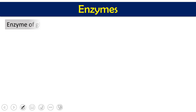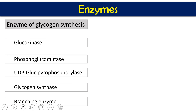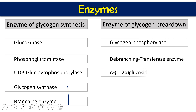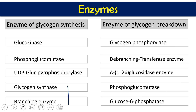The enzymes of glycogen synthesis are glucokinase, phosphoglucomutase, UDP-glucose pyrophosphorylase, glycogen synthase, and branching enzyme. The enzymes of glycogen breakdown are glycogen phosphorylase, debranching transferase, alpha-1,6-glucosidase, phosphoglucomutase, and glucose-6-phosphatase. All ten of these enzymes are present in the cytoplasmic fraction of the liver. However, one enzyme is missing in muscle.